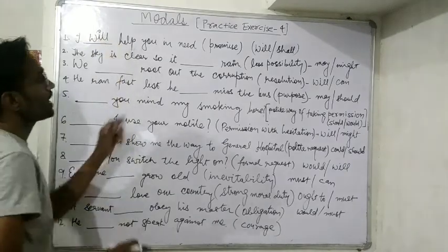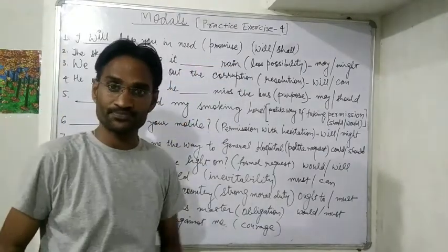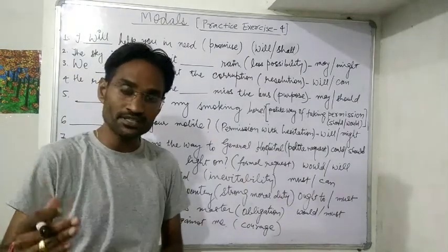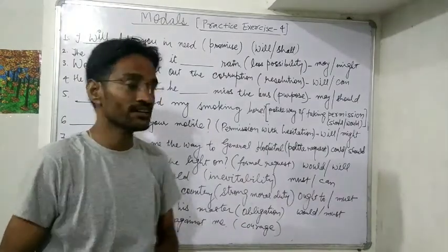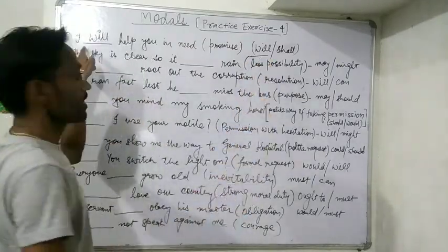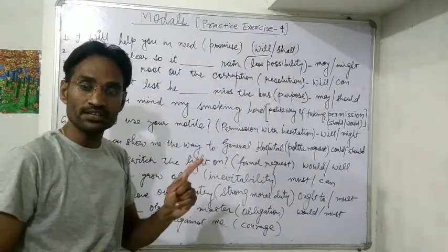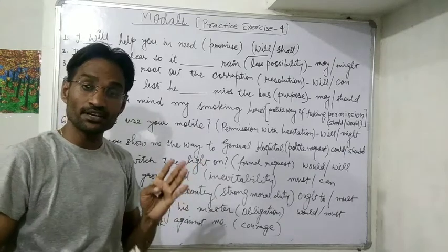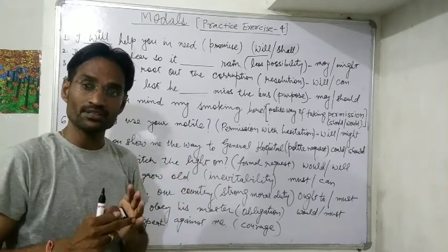Answer: 'I will help you in need.' It is my willingness; I'm committed to help you. So for a promise with first person 'I' and 'we,' when we use 'will,' it gives the sense of promise, commitment, willingness, determination, and resolution.